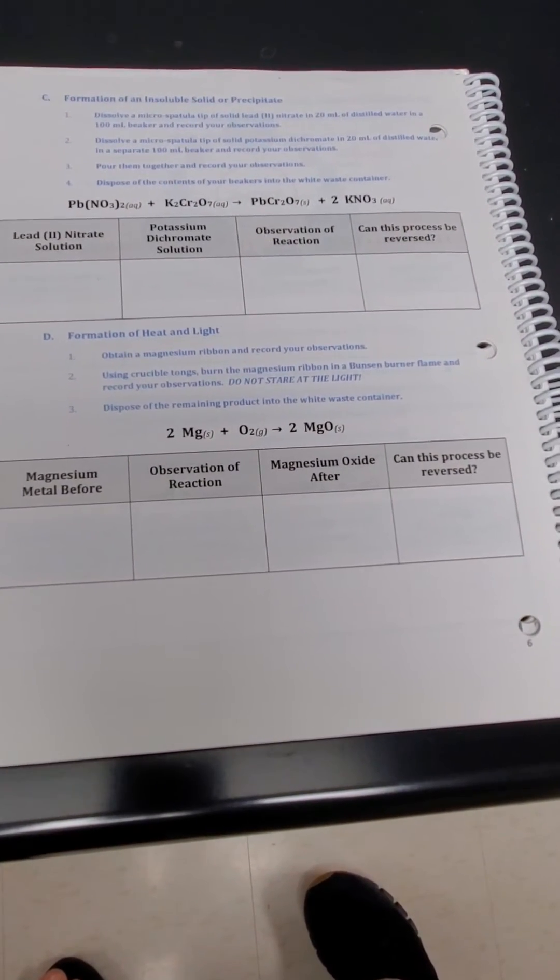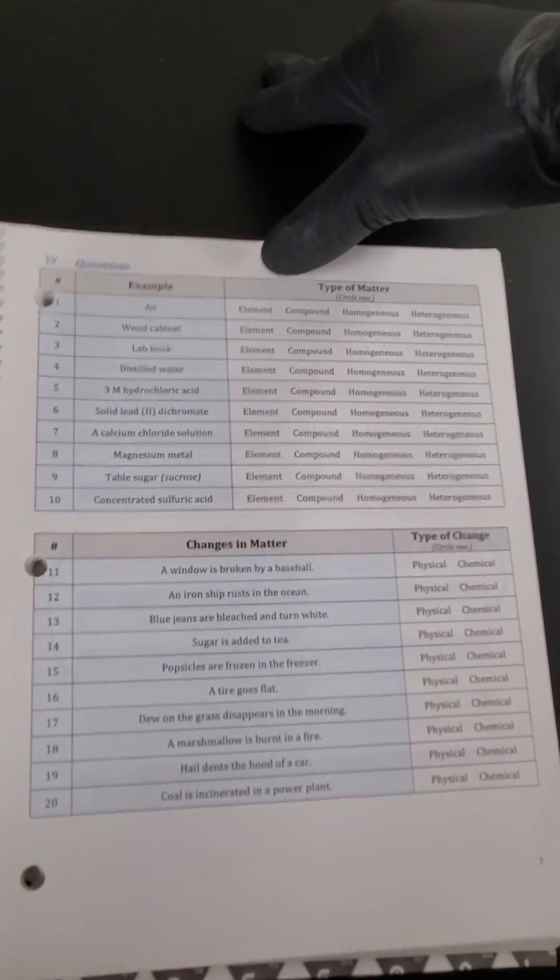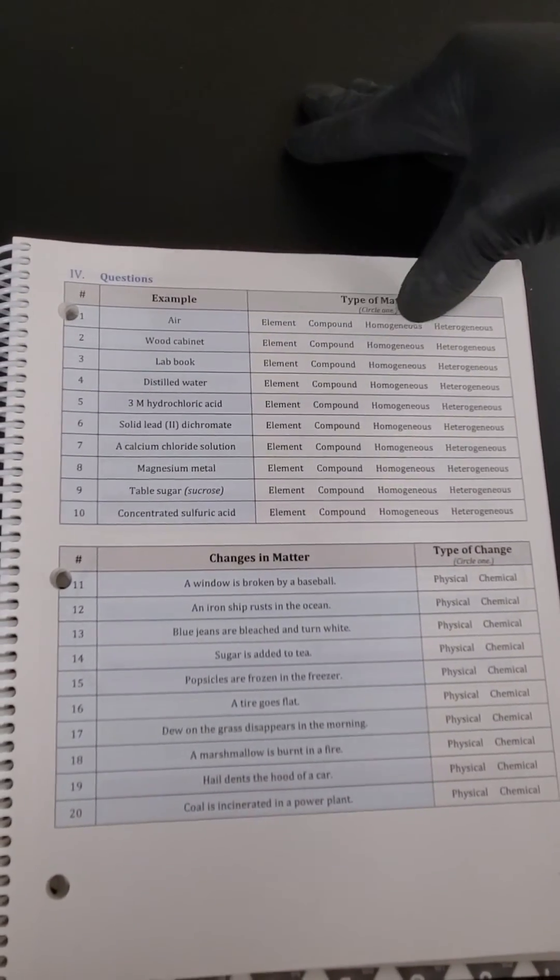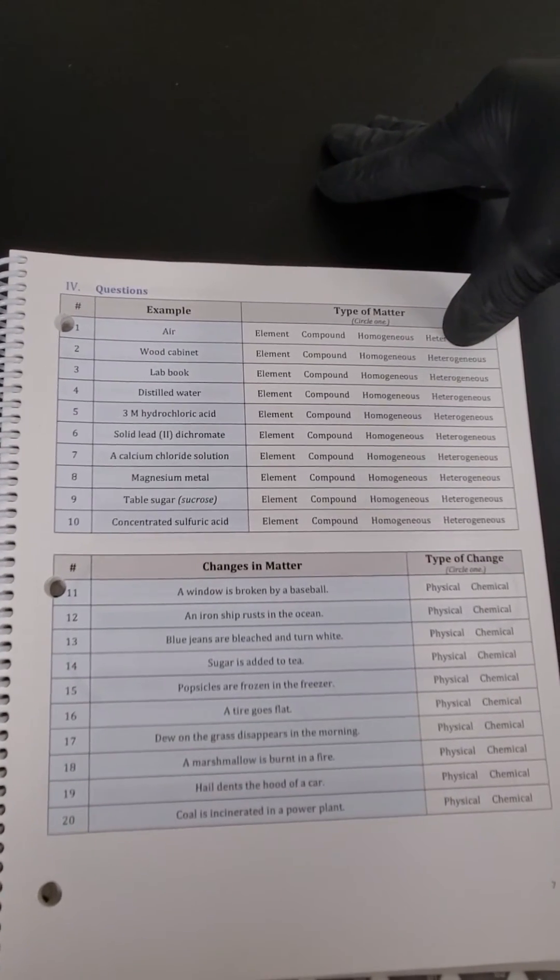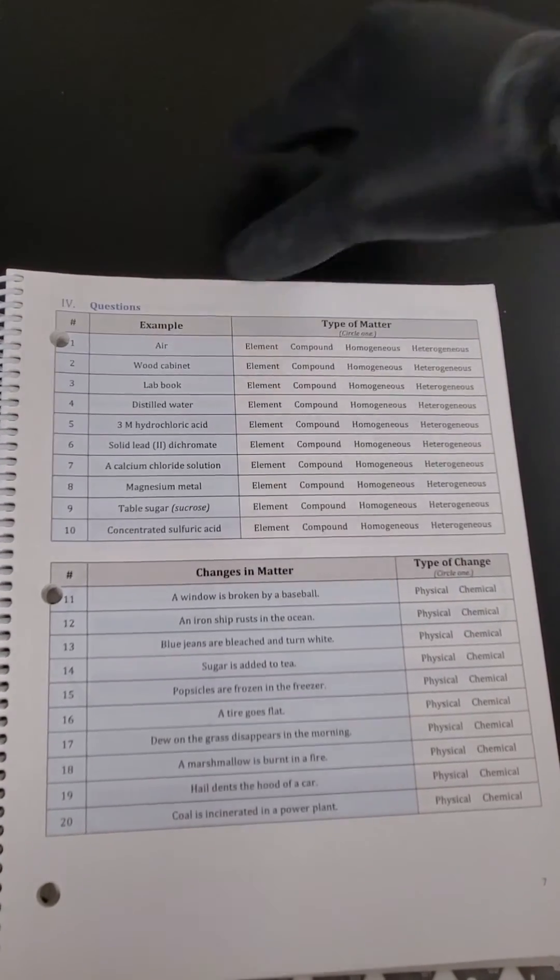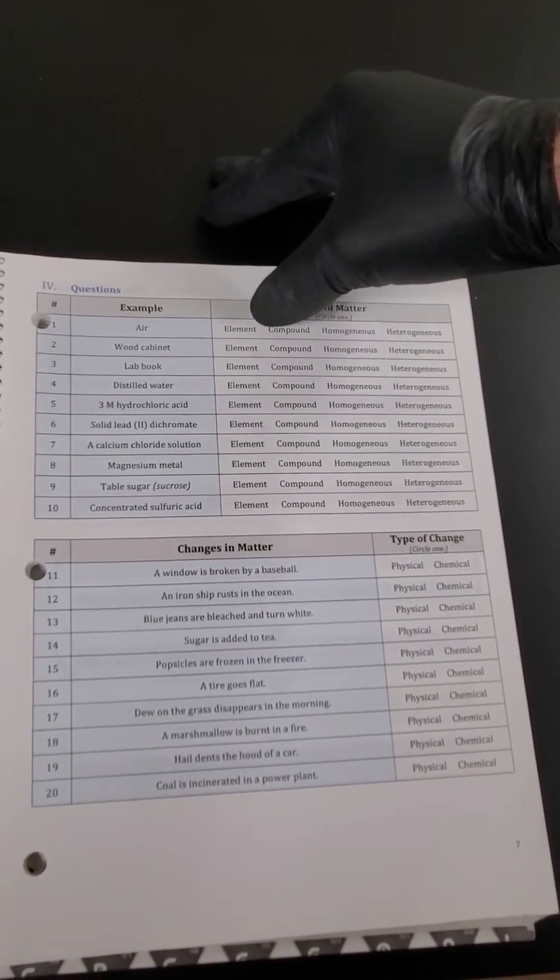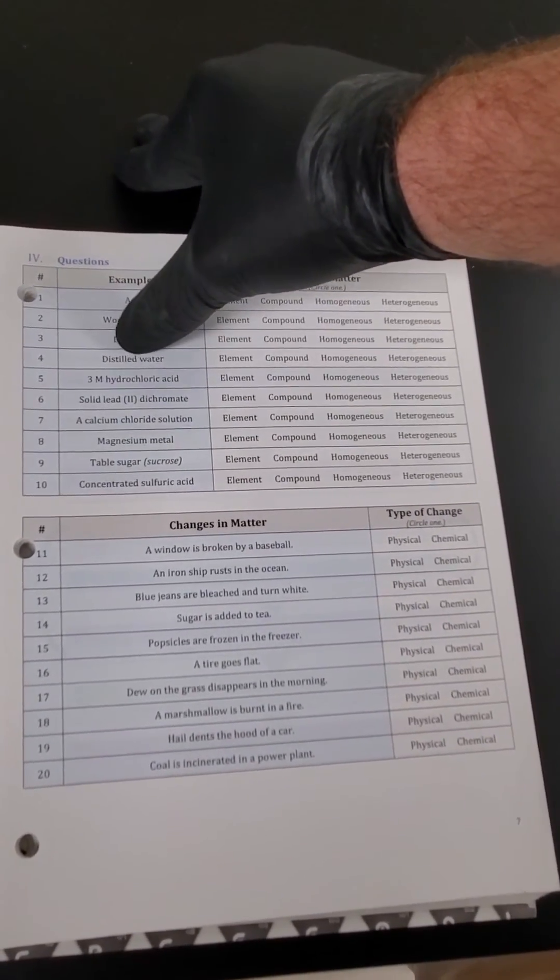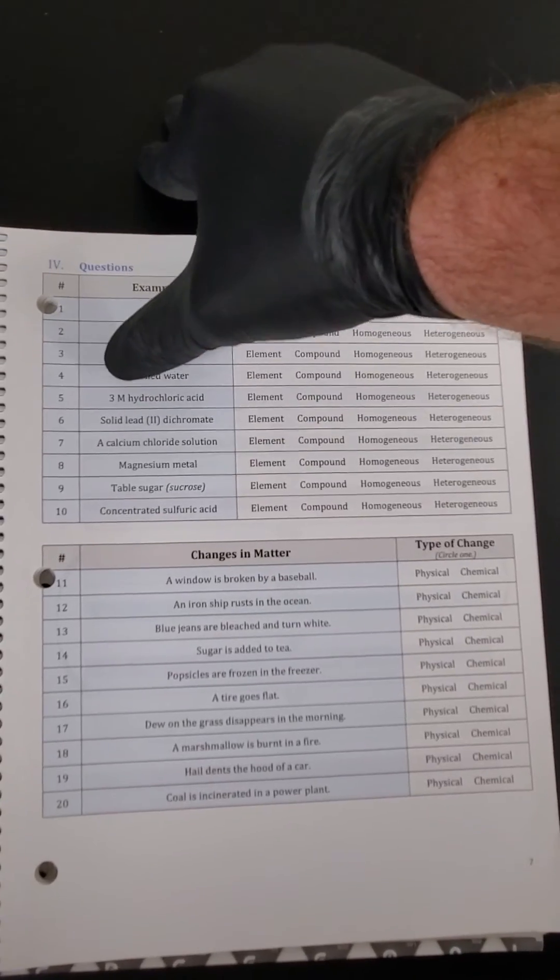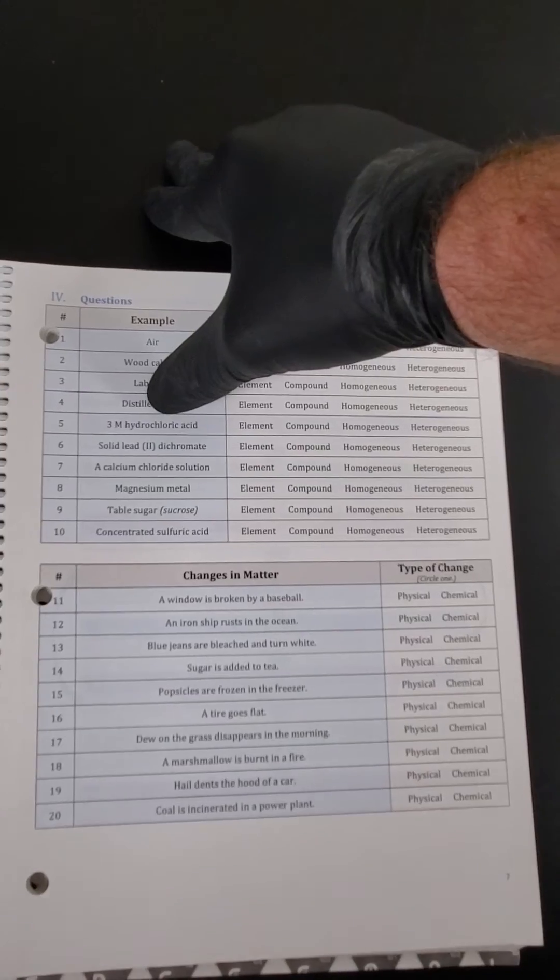So a lot of these examples on the back page, page 7, is to get you familiar with recognizing types of matter. So again we saw air earlier. Think about is that an element, compound, a mixture that looks the same or a mixture that looks different. A wood cabinet, the metal hinges, the wood doors, the wood grain. Try to pick a choice there. The lab book itself has the plastic coil, the spiral itself, the pages, the different colors inks. Distilled water. Distilled is a process where you boil it and recover it. So think about water in that form. 3M hydrochloric acid. That just means that a certain amount has been mixed with water. So think about that idea.